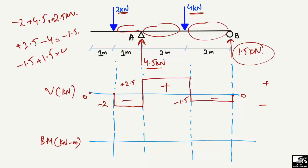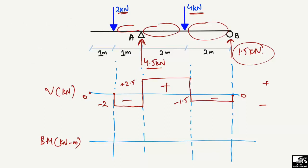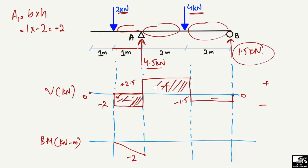Now we draw the bending moment diagram by finding the area of the shear force boxes. The first shear box is a rectangle with height minus 2 kN and width 1 meter, so area A1 equals minus 2 kilonewton-meters. The second rectangle has height 2.5 kN and width 2 meters, so area A2 equals 5 kilonewton-meters.